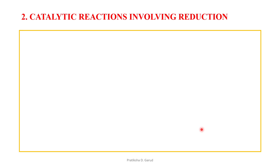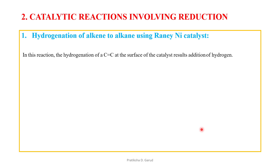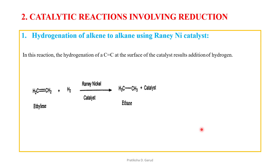The second catalytic reaction is reduction. An example is the hydrogenation of alkene to alkane using Raney nickel catalyst. In this reaction, the carbon-carbon double bond is converted into a single bond by addition of hydrogen at the surface of the catalyst. The net reaction: ethylene + H₂ → ethane, using Raney nickel as catalyst.